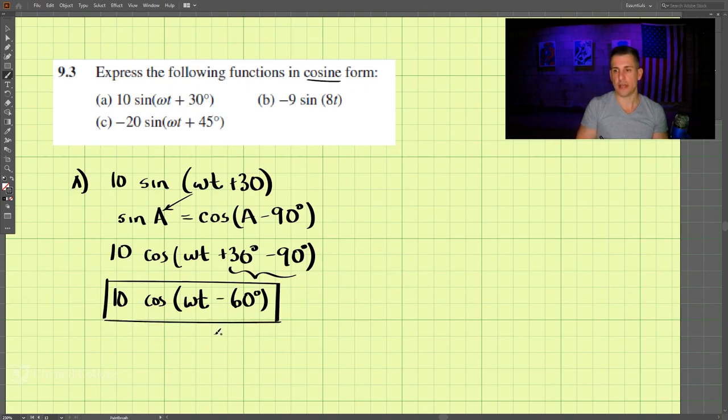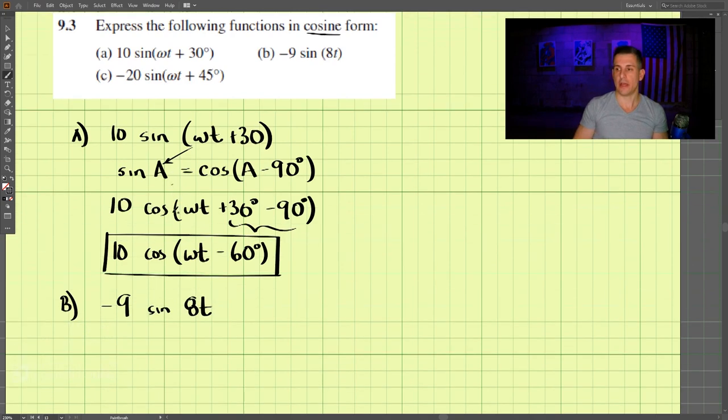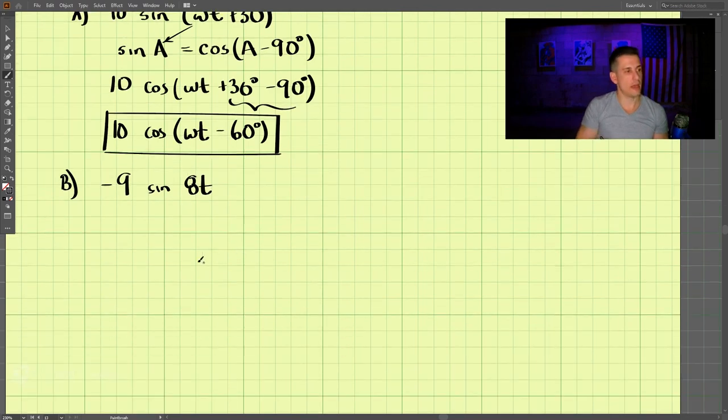Now let's take a look at part b. We're starting out with negative 9 sine 8t. We can use an identity here where the negative sine of some value a is equal to cosine of a plus 90 degrees.